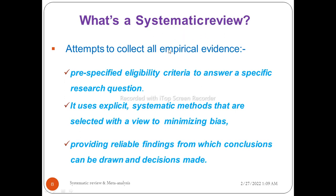A systematic review attempts to collect all empirical evidence based on pre-specified eligibility criteria - meaning inclusion and exclusion criteria are defined before data collection or analysis. It uses explicit and systematic methods to minimize bias, which differentiates it from narrative reviews. This provides reliable findings from which conclusions and decisions can be made, giving it strong evidence.